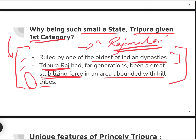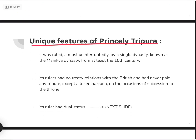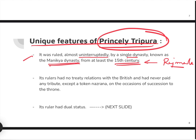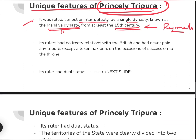Now, what are the unique features of princely Tripura? First, it was ruled almost uninterruptedly by a single dynasty known as the Manikya dynasty — at least from the 15th century as mentioned in the Rajmala. A very important thing: its ruler had no treaty relations with the British and had never paid any tribute, except a token nazrana on the occasion of succession to the throne.